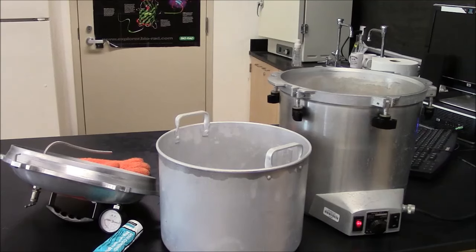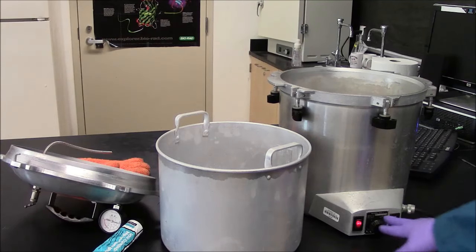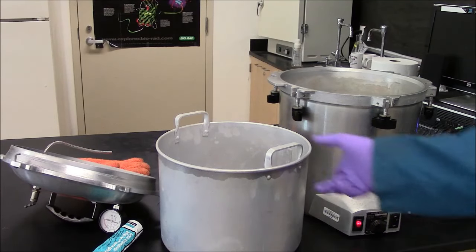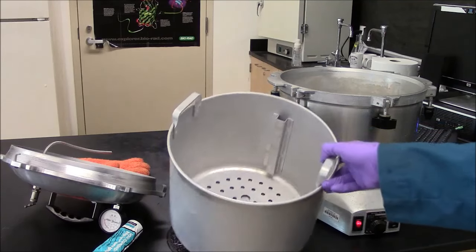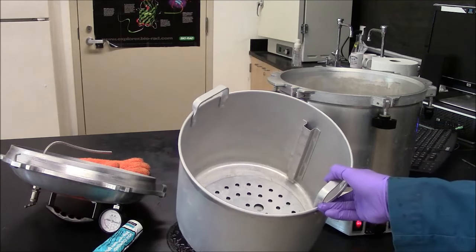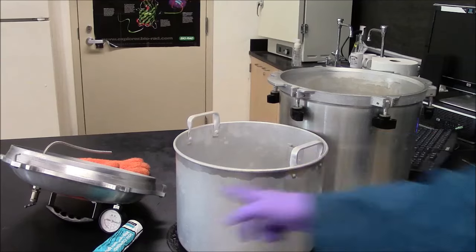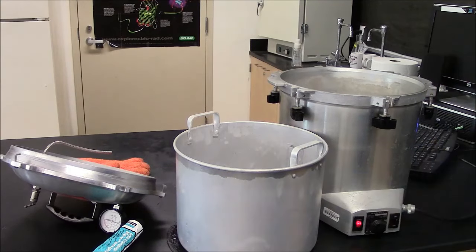The steam sterilizer has a main unit here. This is the electrical part. It has an internal container in which you put your samples to be sterilized and it has a lid to keep the pressure in.